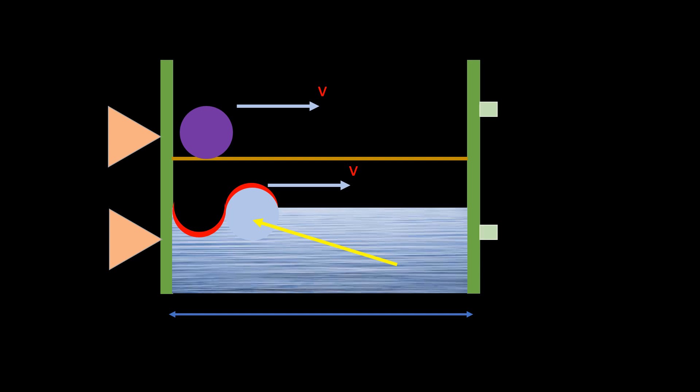When they strike the detectors, their kinetic energies are recorded. Since the wave and the ball have the same number of particles and density, their masses are therefore the same. Since they travel at the same speed, the momenta should also be the same.